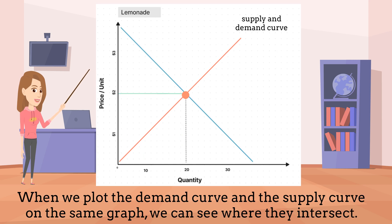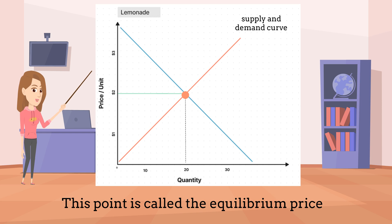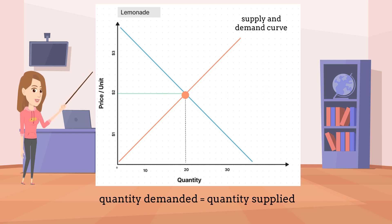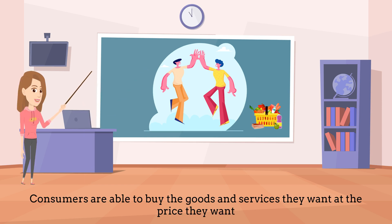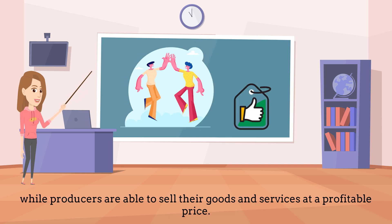When we plot the demand curve and the supply curve on the same graph, we can see where they intersect. This point is called the equilibrium price, which is the price at which the quantity of goods or services demanded by consumers is equal to the quantity supplied by producers. At the equilibrium price, buyers and sellers are satisfied. Consumers are able to buy the goods and services they want at the price they want, while producers are able to sell their goods and services at a profitable price.